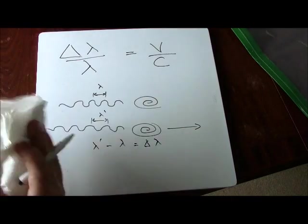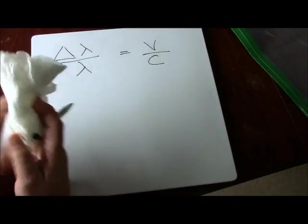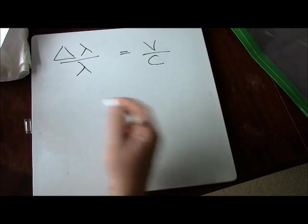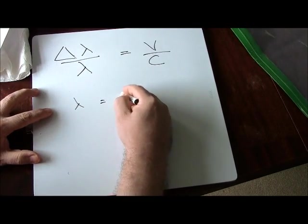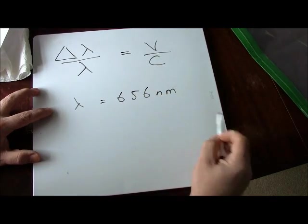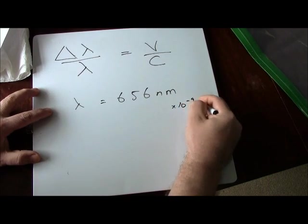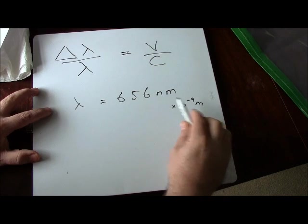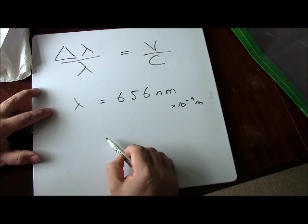Let's do an example. So here's an example. Now when hydrogen gets excited it gives off a wavelength which is 656 nanometers. Nano is times 10 to the minus 9 meters. It's a thousandth of a millimeter is a nanometer. It's very, very small. Don't worry about that.